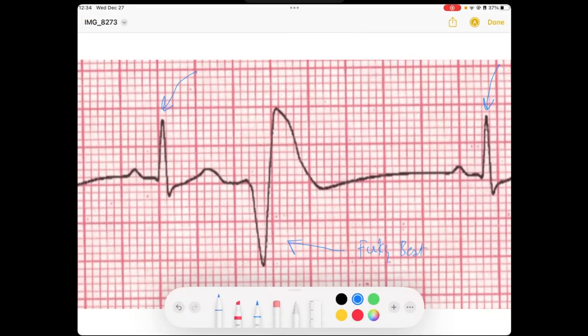And so if we look at our normal beats, we see we've got these pretty P waves. We've got our narrow QRS that is under 120 milliseconds. We've got this pretty T wave. And then we've got this funky looking beat right here.